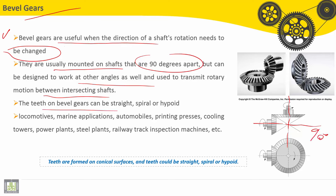Teeth on bevel gears can be straight, spiral, or hypoid. They are used in locomotives, marine applications, automobiles, printing presses, cooling towers, power plants, steel plants, railways, trucks, inspection machines, etc.